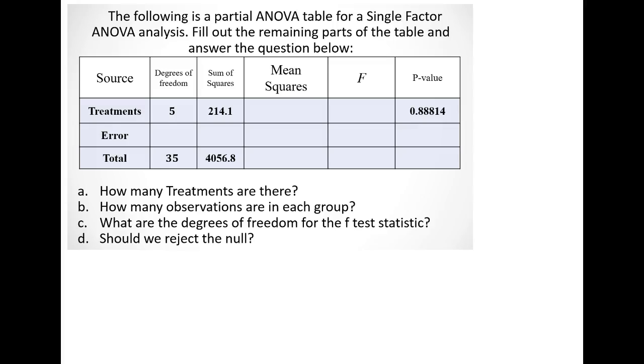The following is a partial ANOVA table for a single factor ANOVA analysis. We want to fill out the remaining parts of the table and answer the questions below. We can see that the degrees of freedom for the treatment group is 5 and the degrees of freedom for the error is missing, but the total degrees of freedom is 35.